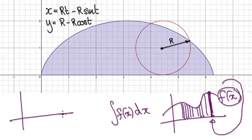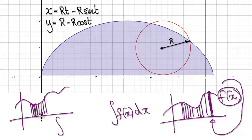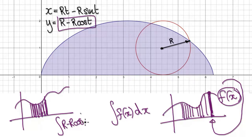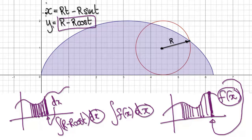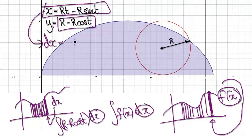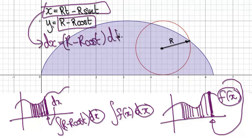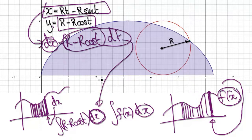In parametric form, it works in pretty much the same way. If you want to work out this area, you need to sum up all the heights — given by the y-expression — and then the thickness is dx, just like before. But we can replace dx by differentiating: dx equals R minus R cos(t) dt. So we replace that dx with this whole expression, turning everything into dt.